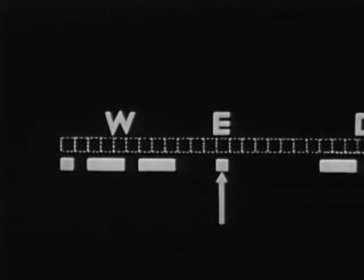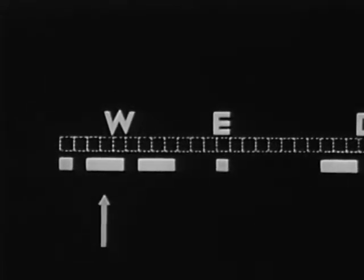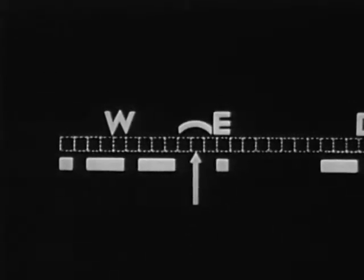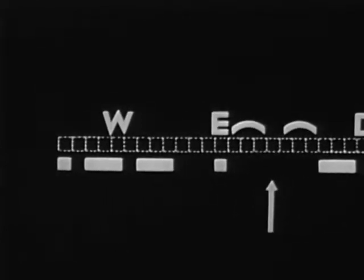The white boxes represent the sounds heard — the dis and the da's. The black boxes represent the spacing between the sounds. The da is three times as long as the di. The space between the dis and the da's that make up a letter is equal to one di. The spacing between letters is equal to three dis or one da. The spacing between words is equal to seven dis or two da's. These are the basic elements of Morse code.